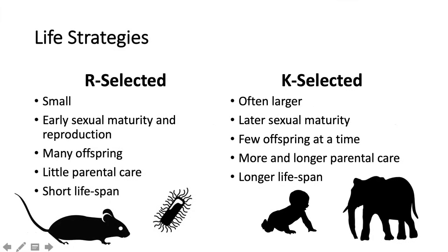Let's start off with covering life strategies since you will have to apply K and R selected organisms to other things such as the survivorship curves in the test. Your R selected individuals are usually going to be smaller organisms, like mice, bacteria, rabbits, even weeds. They're typically going to sexually mature very early on in their life. So let's say you are a mouse, maybe within two or three months you're able to start reproducing and you'll probably start having babies right away.